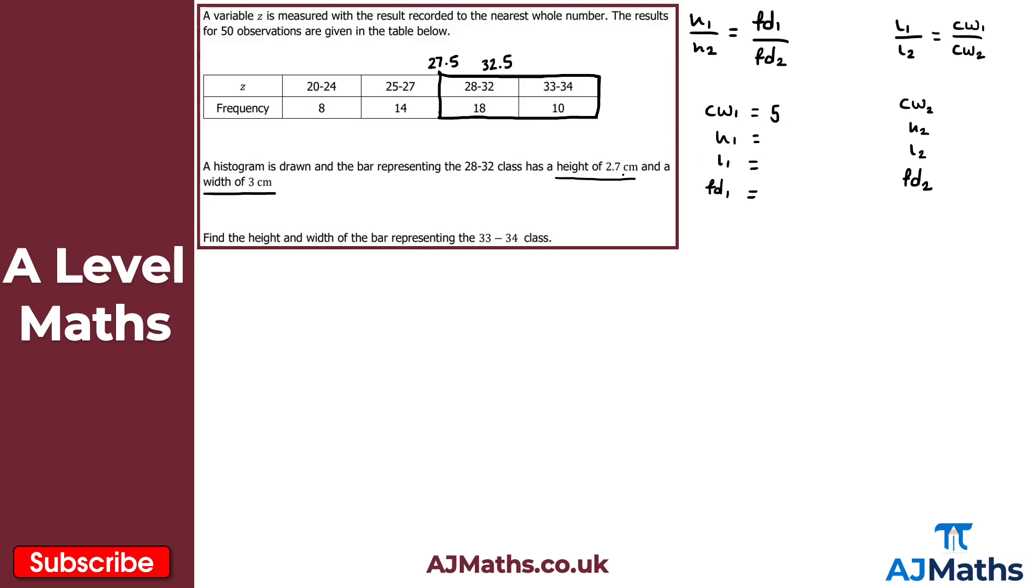H1, we are given. That's 2.7. For the width, that's also given. That's 3 centimeters. And then for the frequency density here, frequency density is equal to the frequency divided by the class width. So my frequency is 18. We divide that by the class width here, which is 5. We've got 18 over 5, which is equal to 3.6 there.